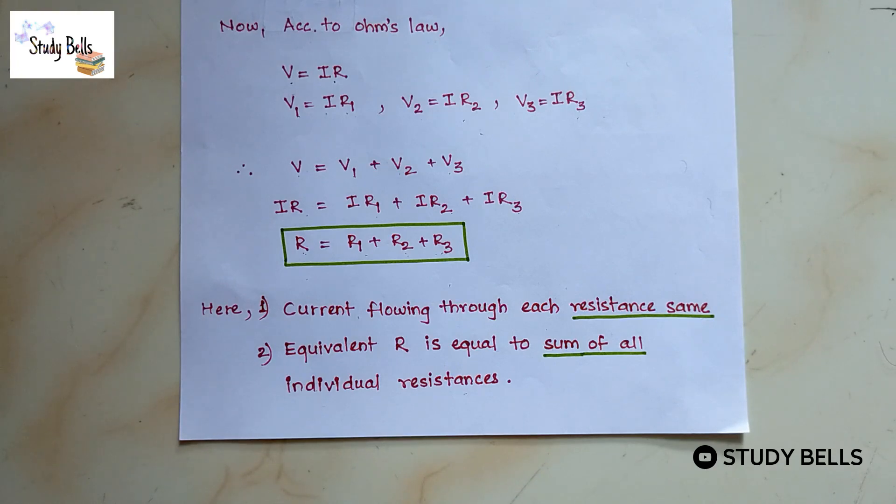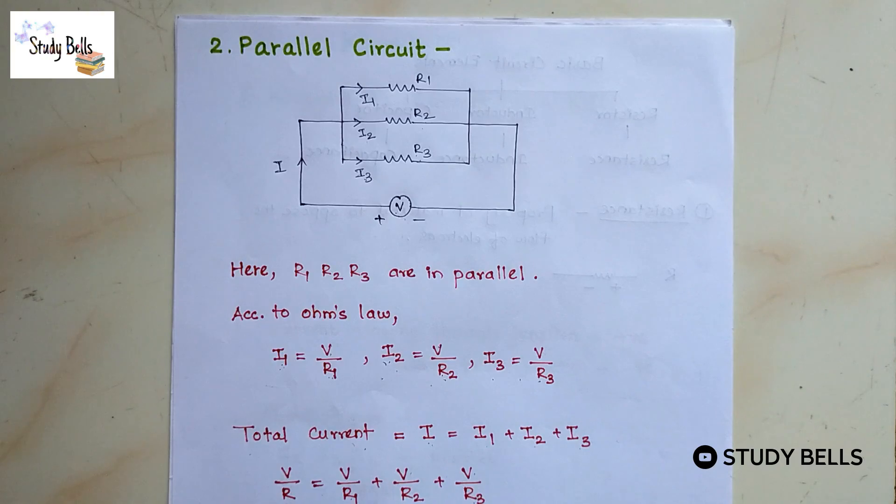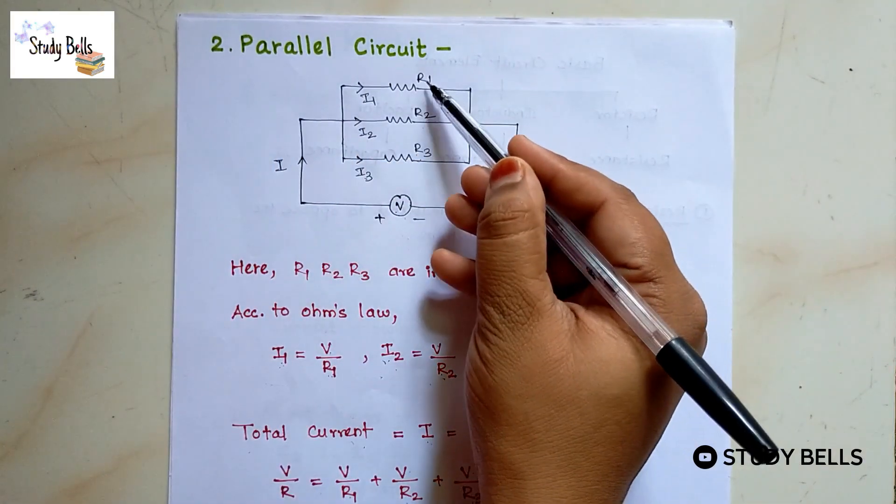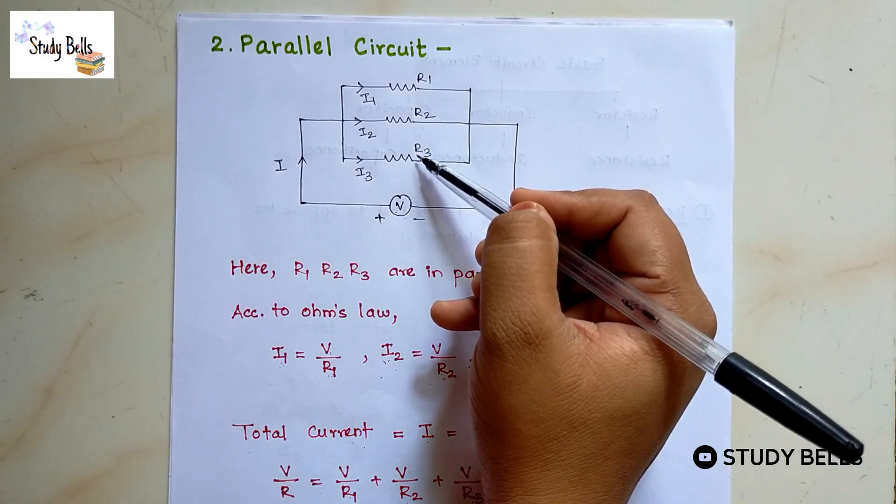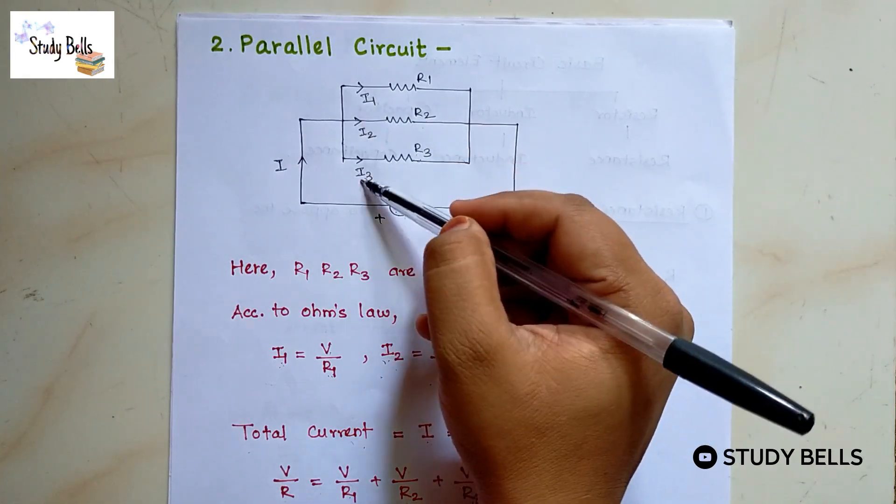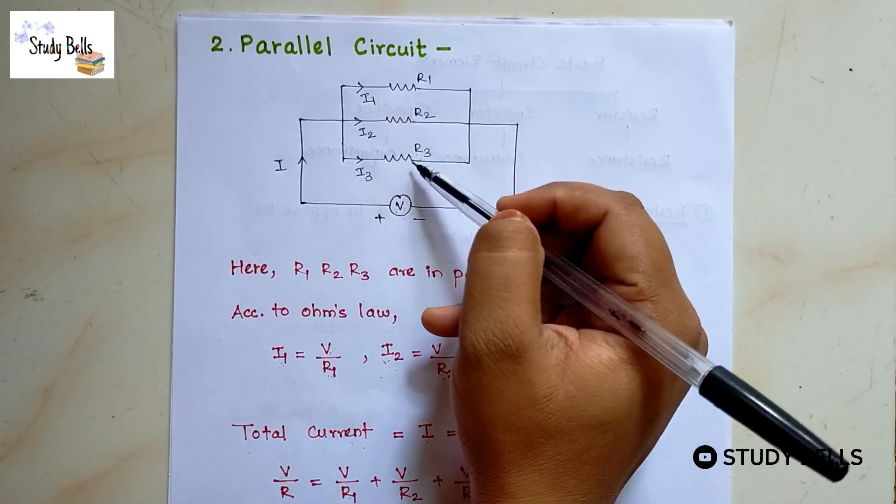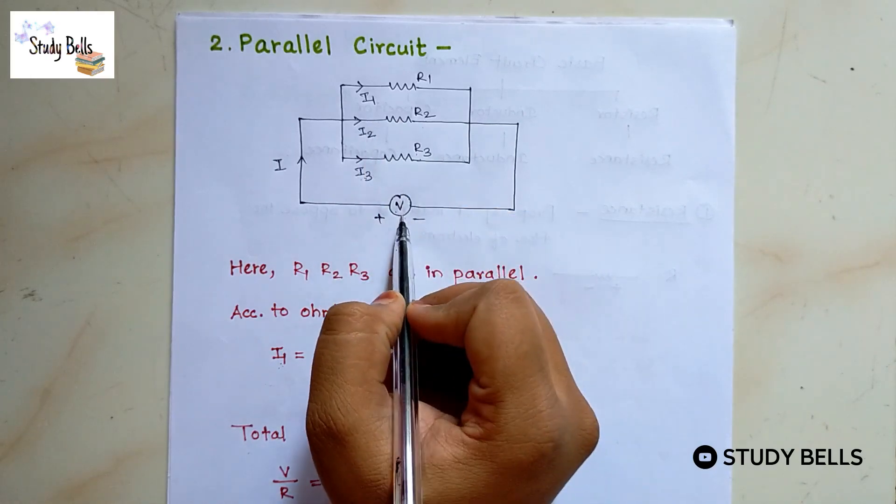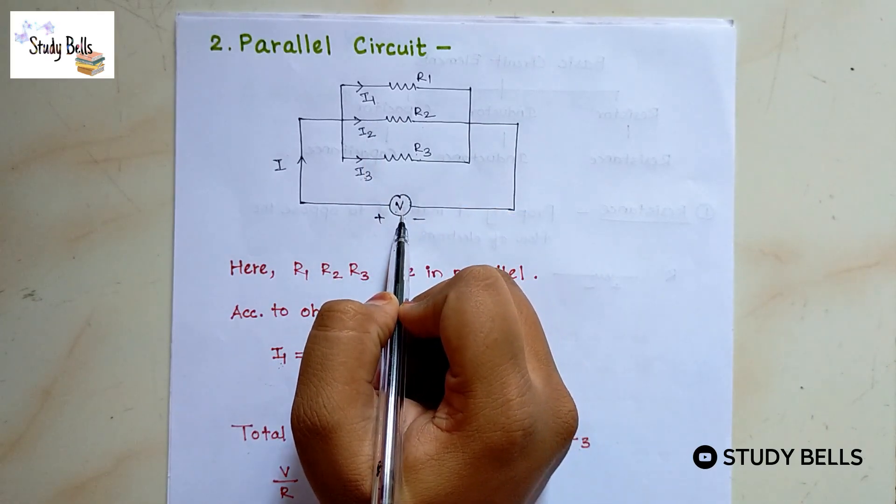Now we will see what is parallel circuit. Parallel circuit. Here three resistances put below each other. R1, R2, R3. I1, I2, I3 are current through each resistance. So here we see current is different but potential difference that is voltage is same.